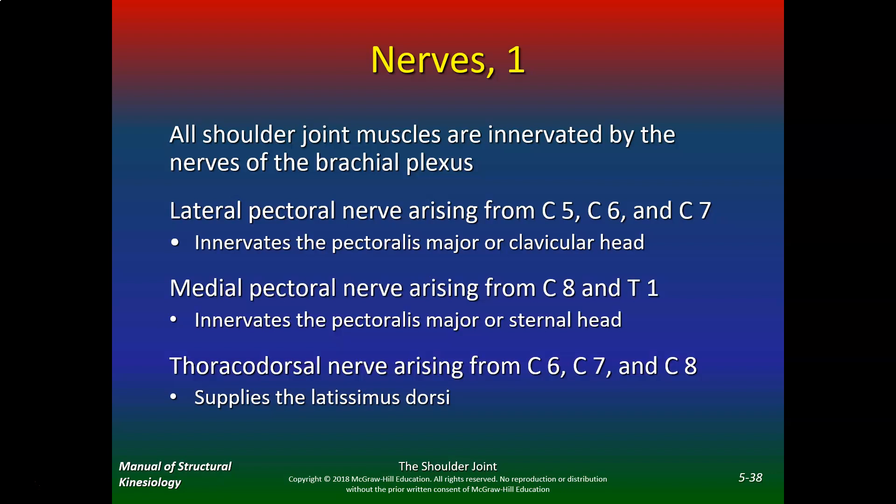All shoulder joint muscles are innervated by nerves of the brachial plexus. The lateral pectoral nerve, arising from C5, C6, and C7, innervates the pectoralis major clavicular head. The medial pectoral nerve, arising from C8 and T1, innervates the pectoralis major sternal head. The thoracodorsal nerve, arising from C6, C7, and C8, supplies the latissimus dorsi.